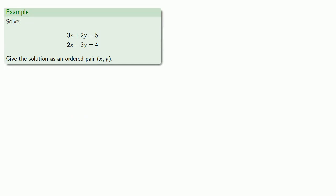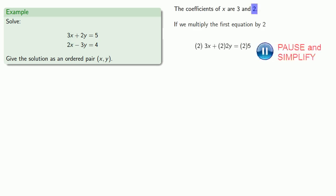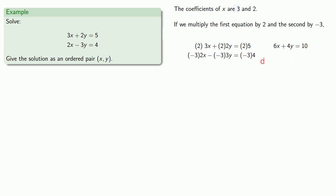So what should we multiply our equations by? Well, we might do a little analysis. The coefficients of x are 3 and 2. If we multiply the first equation by 2 and the second equation by negative 3, then notice that the net effect of this is that our coefficients of x are equal but opposite.